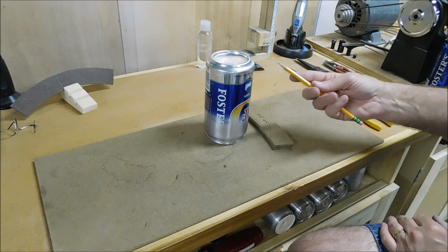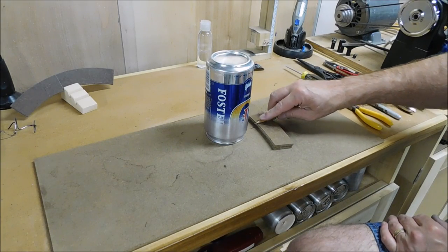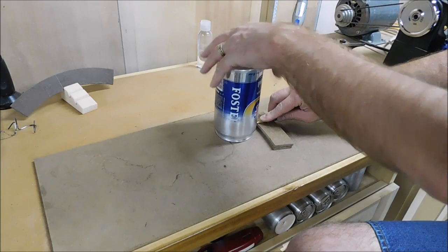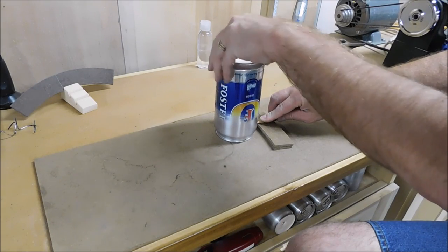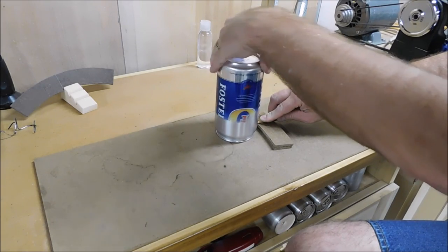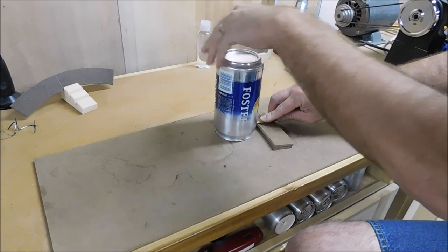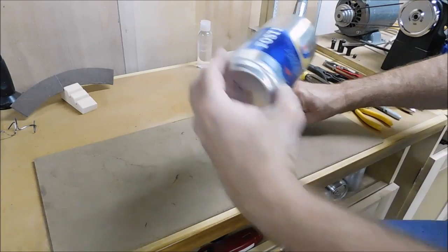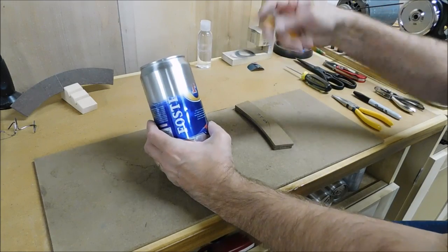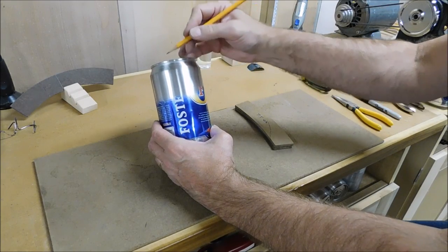Turn the can on its top and I've got a sharp pencil. I'll put on the two templates and rotate the can against it. And that makes a nice line in the right spot for me all the way around.